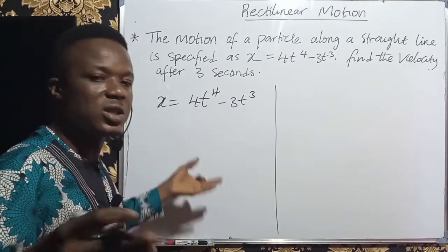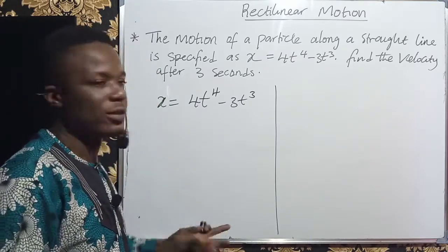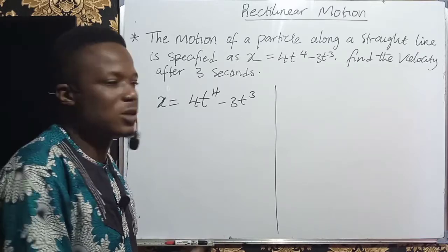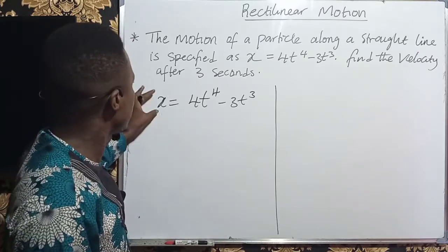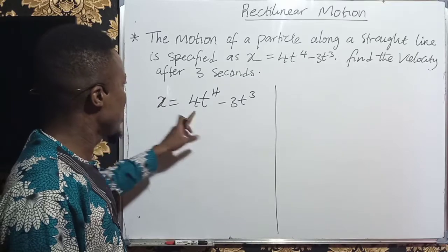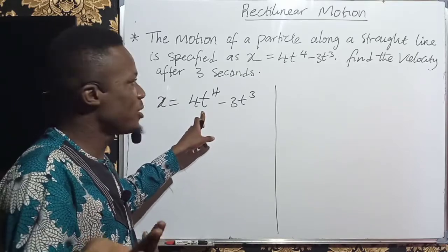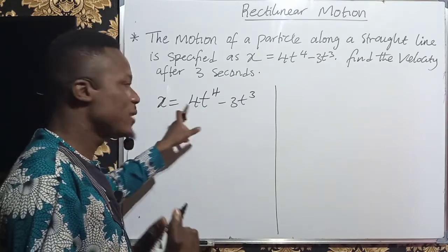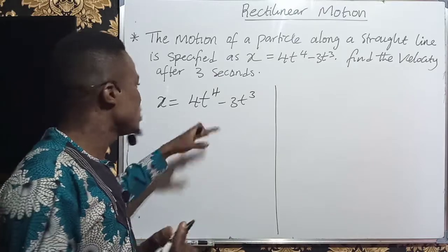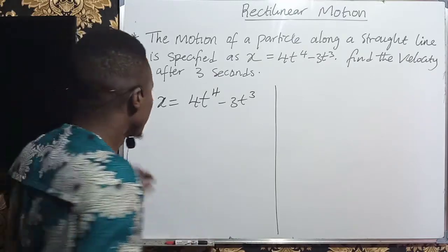By definition, velocity is the rate of change of displacement with time. The rate at which displacement changes with time. And this x here is the displacement, t is the time. So to get the velocity, I need to get dx over dt, because dx/dt will give me the velocity.